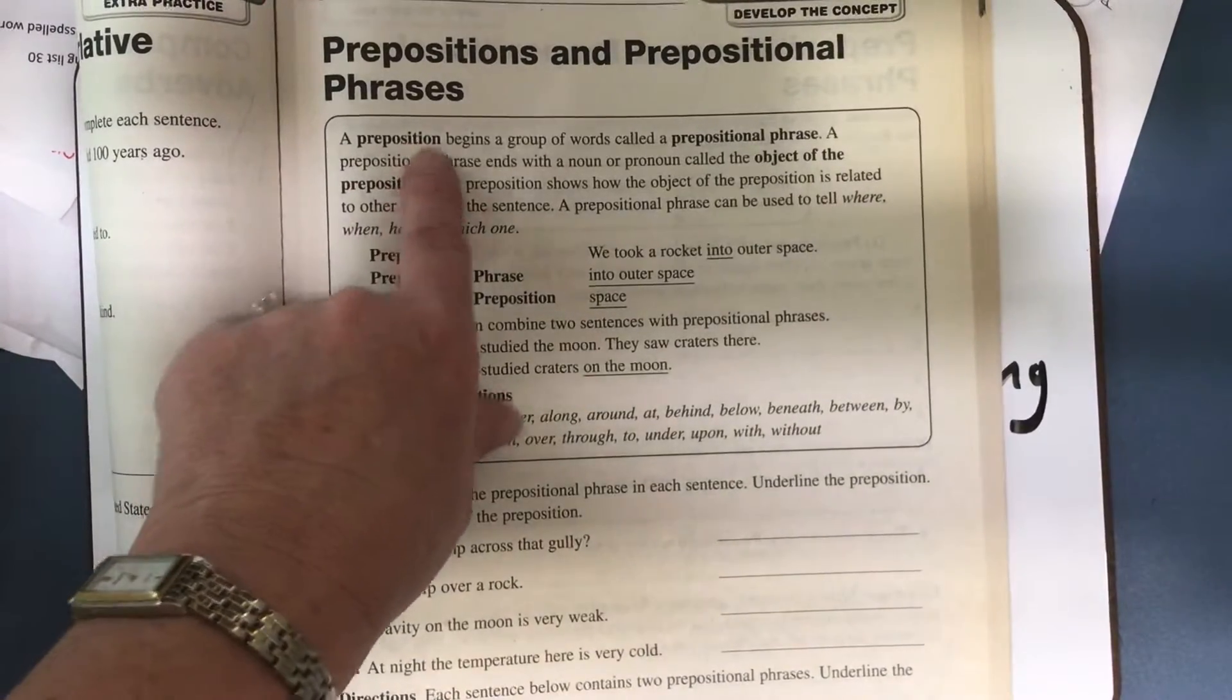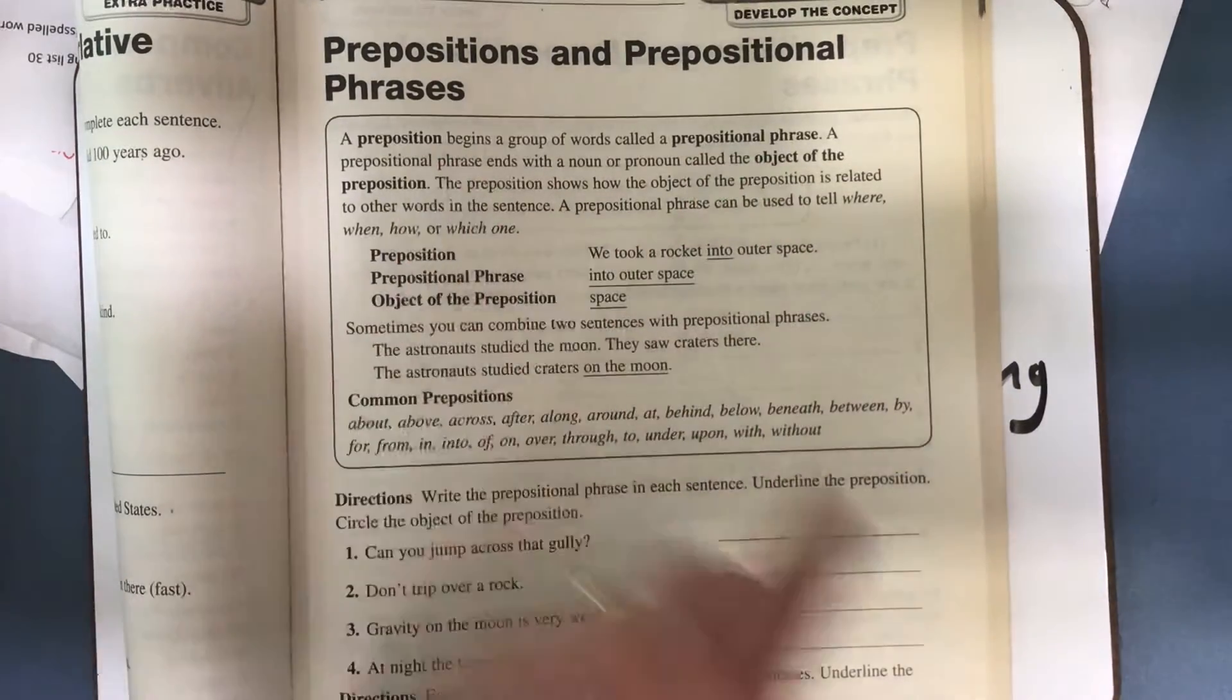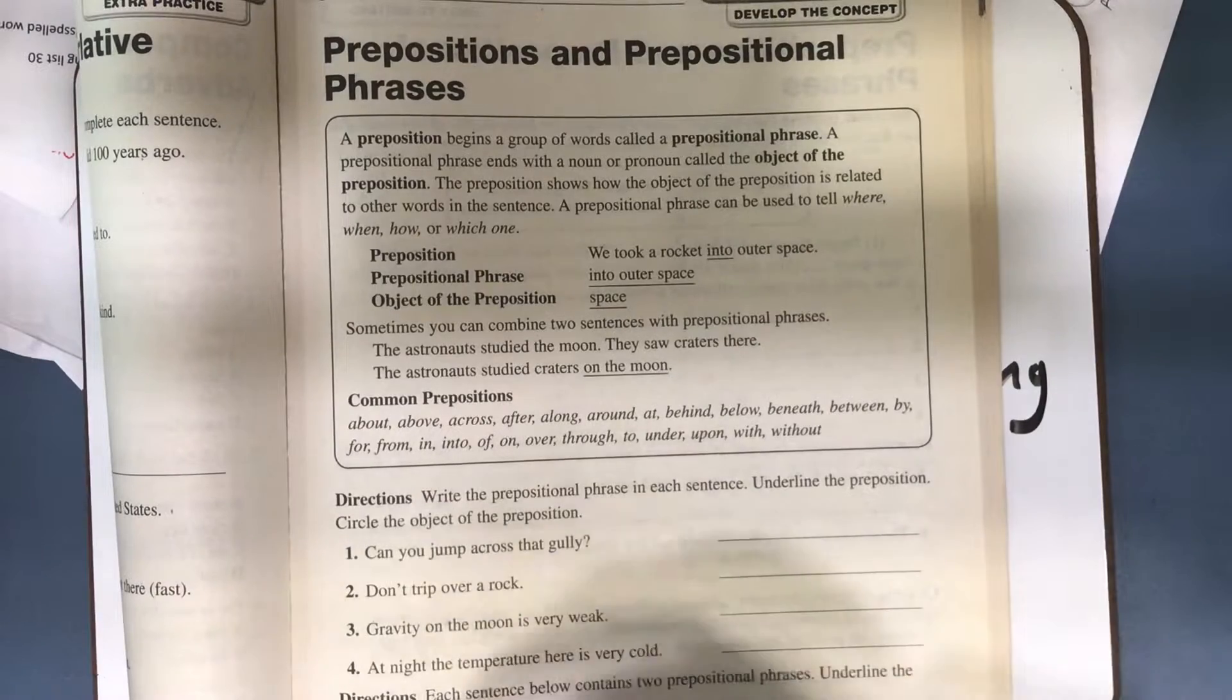Well, a preposition is the first word in a group of words called a prepositional phrase. The prepositional phrase starts with the preposition and ends with a noun, like to the forest, in the store.